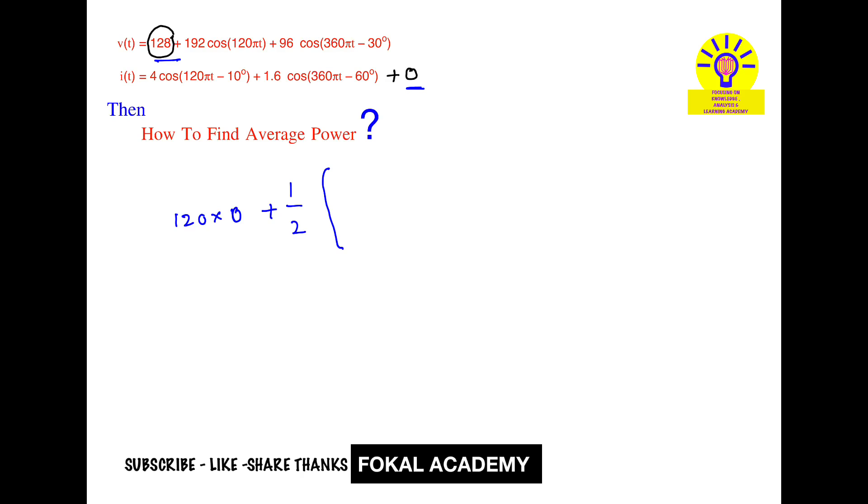Next, this signal, that is cos of 125T, here also cos of 125T is there. So their amplitudes are 192, 4, product it 192 into 4 into cos of the difference between the phases. So here 0 degrees is there, here 0 degrees is there, here minus 10 is there.